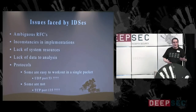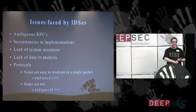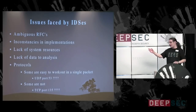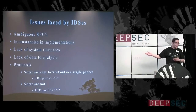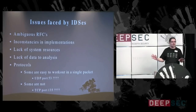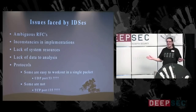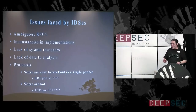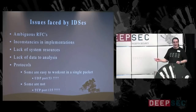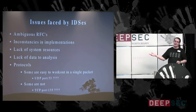Protocols are interesting — there are certain protocols where you are able to, within a single packet, tell exactly what it does. UDP port 53 is a really easy one — we know exactly what's going on in that packet with a little bit of deep packet inspection. However, some are not. TCP port 135, MSRPC — you're going to need more than one packet to analyze whether there's a threat.